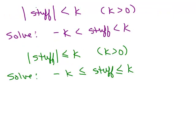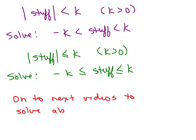To summarize: most problems will be in the form where you have a positive number K on the right. If you have the absolute value of some stuff less than a positive K, you take the stuff out and put it between negative K and K. If it's less than or equal to K, use the less than or equal to symbols. When K is negative or 0, think it through — those are the special cases we covered in this video. Now we'll move on to the next video to solve absolute value inequalities with greater than or greater than or equal to problems.